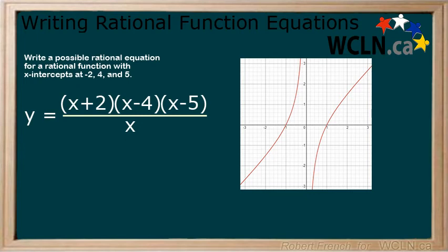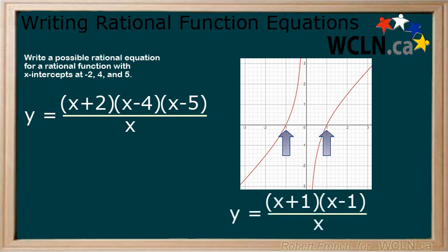In the second example, we have a graph of a rational function with x-intercepts at x equals negative 1 and x equals 1. Therefore, we add factors of x plus 1 and x minus 1 in the numerator for these.